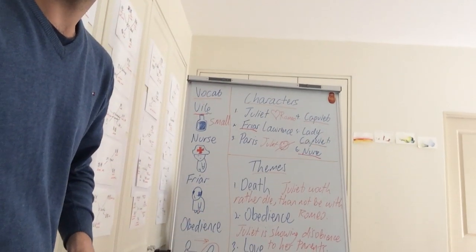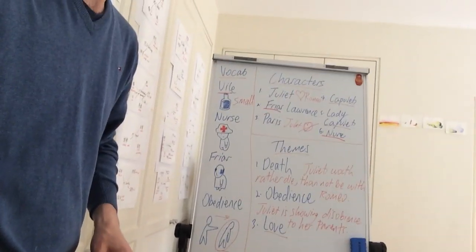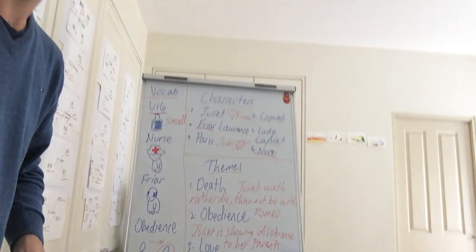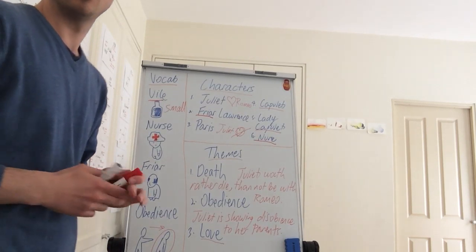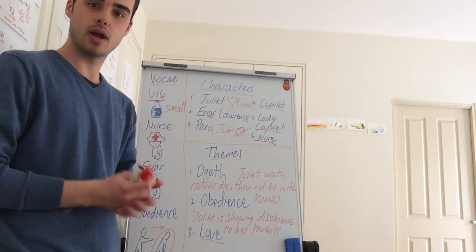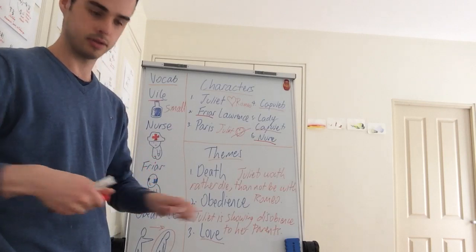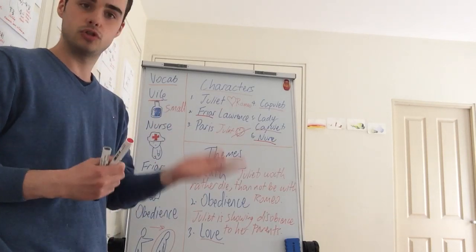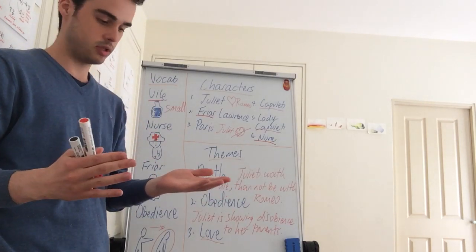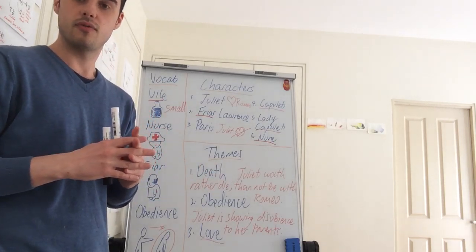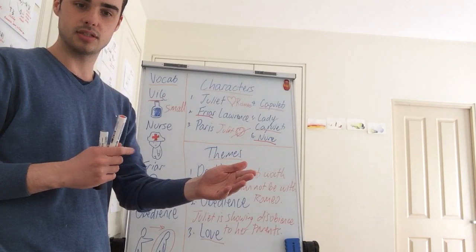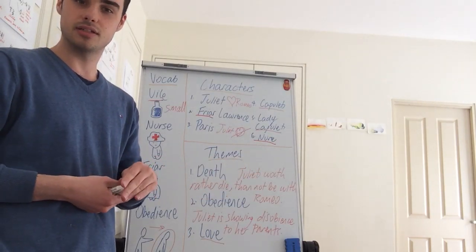And the final one down here is love. Which is very important. Because love is the main theme throughout the entire play. So Romeo's love for Juliet. Juliet's love for Romeo. It's what brings them two together and ultimately leads to their very unhappy ending, which we'll discuss in the next few classes.